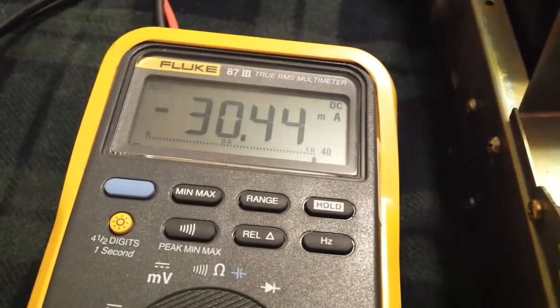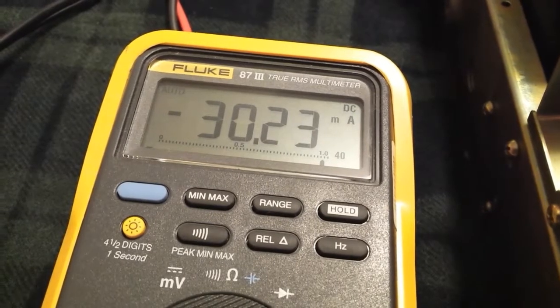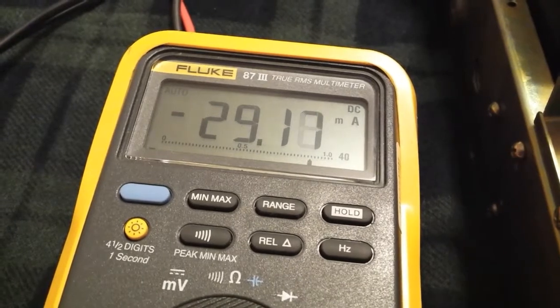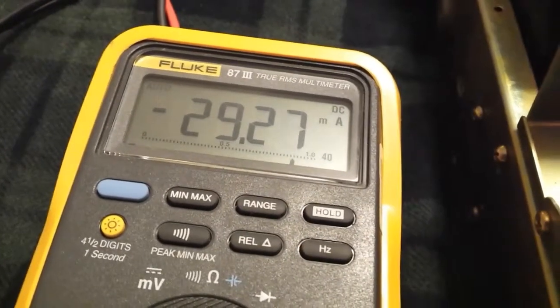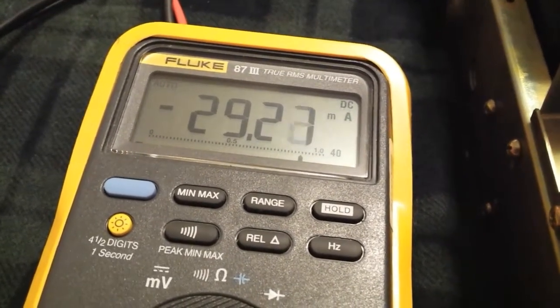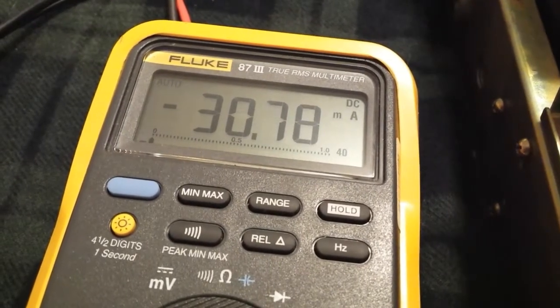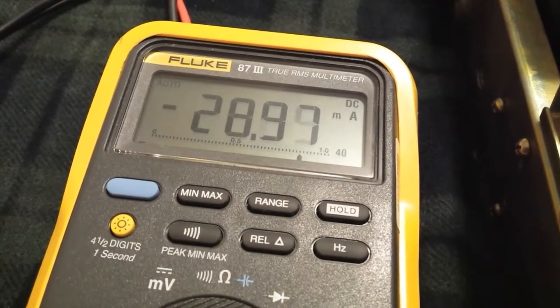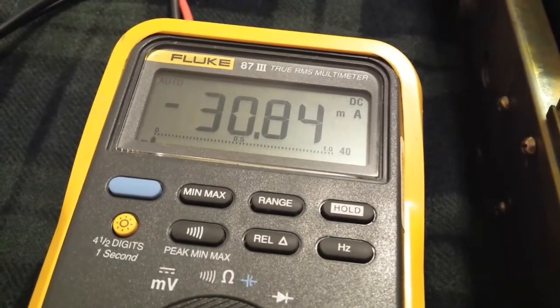By all means be careful because there's high voltages in here. Another problem with these 881s is these fuse clips lose their tension. Just take a little pair of pliers and squeeze them together a little bit. That'll make them grip the fuse much better.